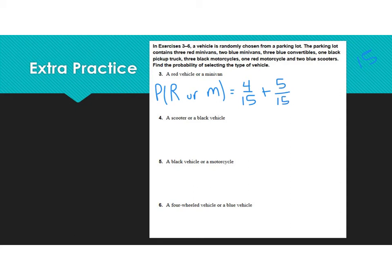Is there overlap? Are there red minivans? Of course there are. So we subtract how many red minivans there are — that is 3 out of 15. That gives us 6 out of 15, which reduces to 2 out of 5. So we have a 2 out of 5 chance of selecting either a red vehicle or a minivan.